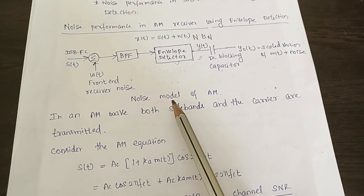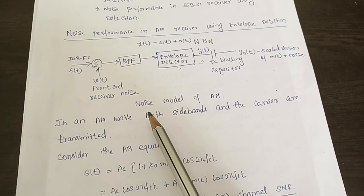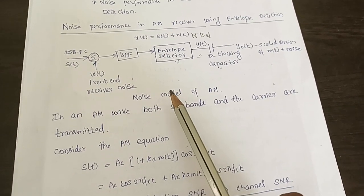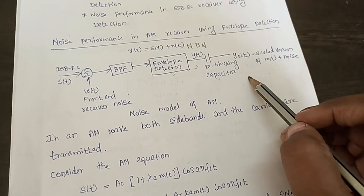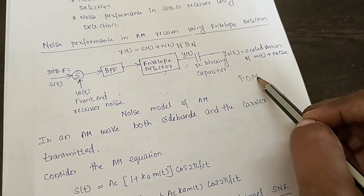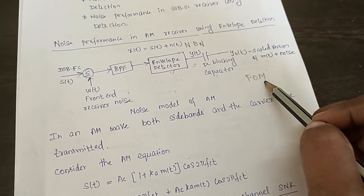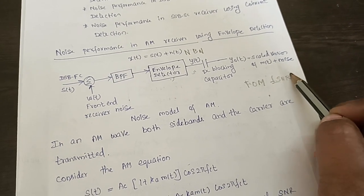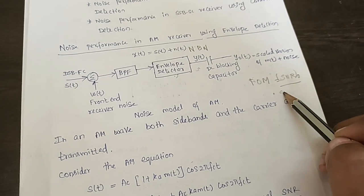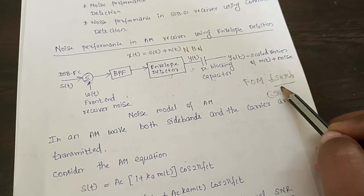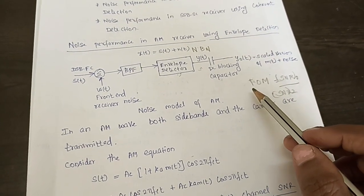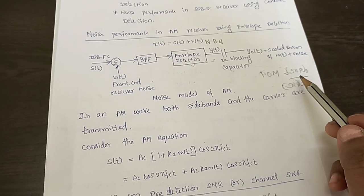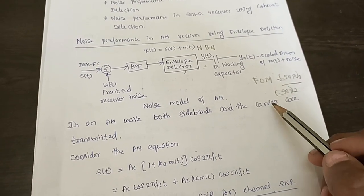This is called the noise model of AM. Whenever we analyze the noise performance of AM or FM receivers, our main aim is to find the figure of merit (FOM). This figure of merit is obtained by finding the ratio of SNR at the output to the SNR at the input. So our main aim is to find the SNR at the input as well as the SNR at the output, from which we can find the figure of merit.